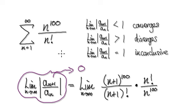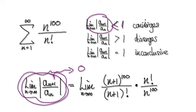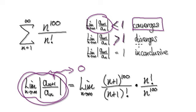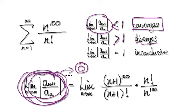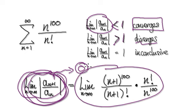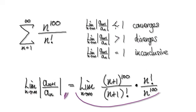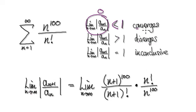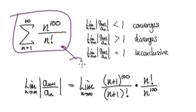Now remember, when it comes to the ratio test: if this value here is less than one, then we can immediately conclude that it's going to converge. If it's greater than one, then we can immediately conclude that it's going to diverge. If it's one, then it's inconclusive. But in our case, this value turns out to be zero — and zero is less than one — so we can conclude that the series will converge.